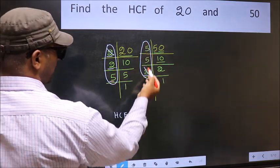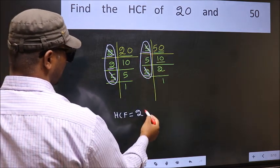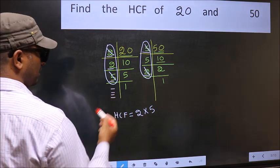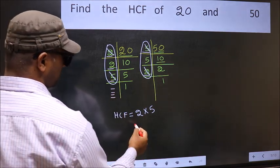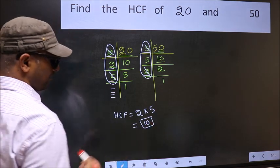Next number 5. Do we have 5 here? Yes. So cut 5 right here. No more numbers have been left out. So our HCF is 2 into 5. 10 is our HCF.